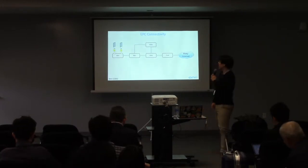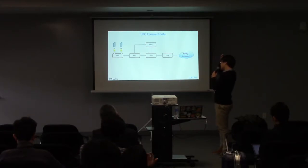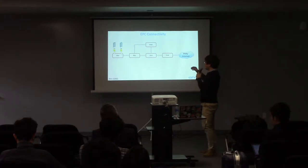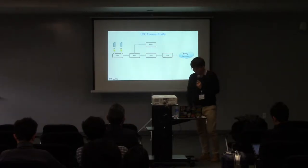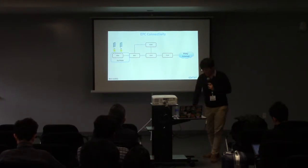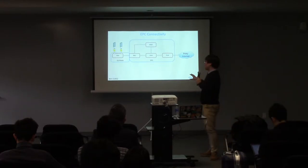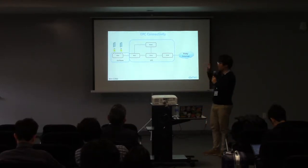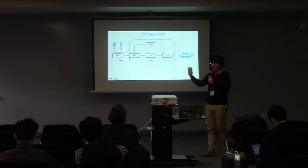Here is the EPC connectivity. As you already know, there are several essential cellular network functions. We can divide this figure into two parts. The first one is U-Trend, which is highly related to the radio part. The second one is EPC, which is the core network. In the mCORD pod, we actually focus only on the EPC, not U-Trend, because the RRH — the base station — is outside the mCORD pod.